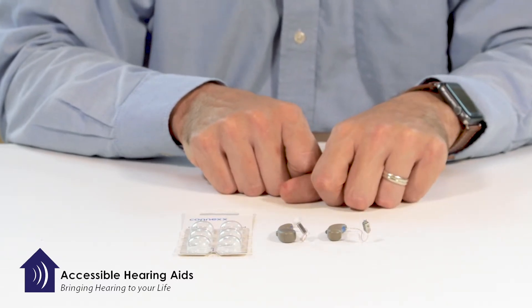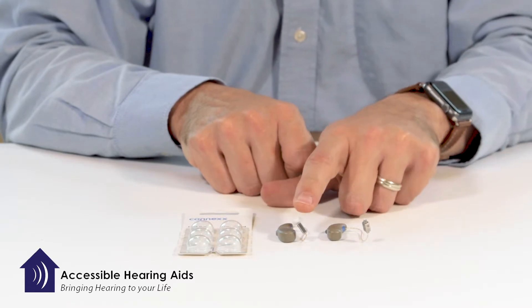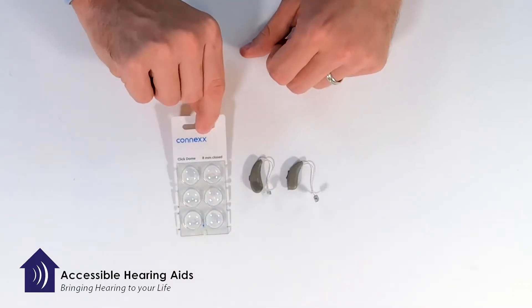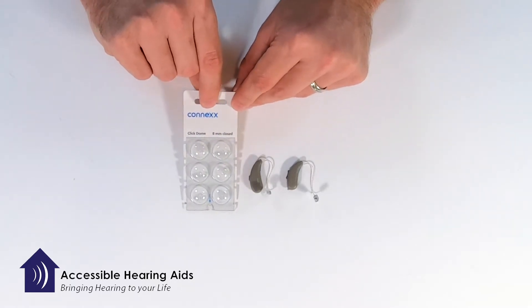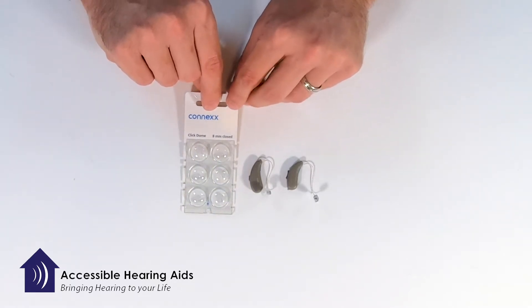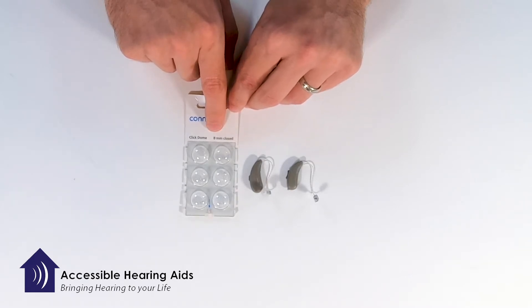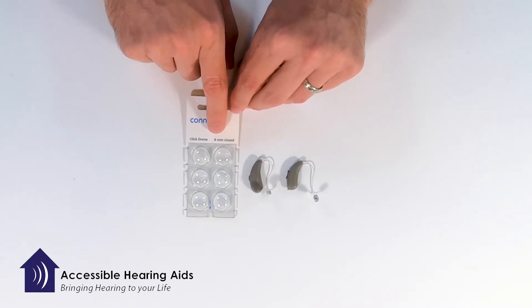I wanted to show you how you actually replace this tip. You have your extra tips here - they should be included when you receive hearing devices from your hearing professional. There are different sizes. This happens to be an 8 millimeter closed. There are also 6 and 10 millimeter closed, and 6, 8, and 10 open. There are a couple of other types of double domes if you have more power that's required from the hearing device, but your hearing professional will discuss the type of dome that you need.